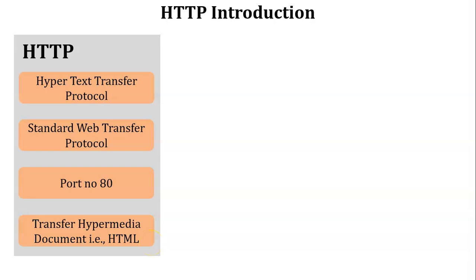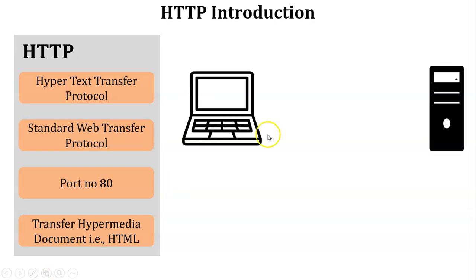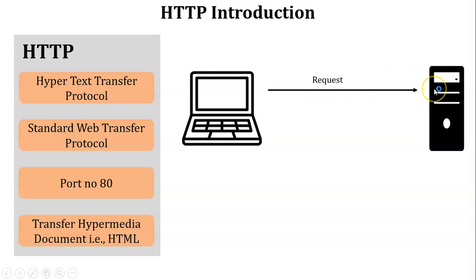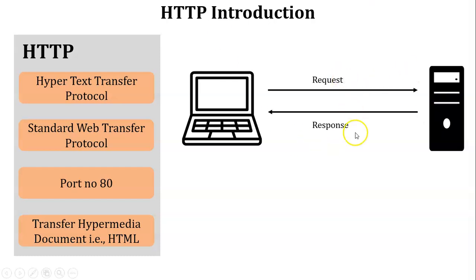The working of HTTP is based on request-response behavior. For example, there is one client and one server. The client wants to access a file from the server, so first the client makes a request to the server for the particular information or file. The server then reads the request and sends the requested file back to the client — that is called a response. This is known as request-response behavior.